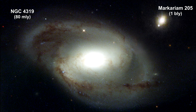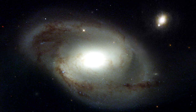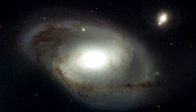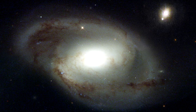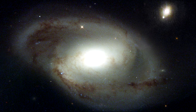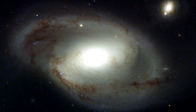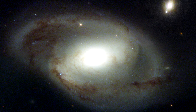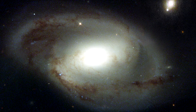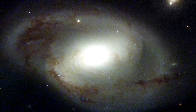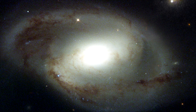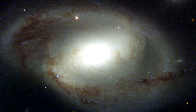This Hubble image shows the inner region of galaxy NGC 4319. The unusually dark, misshapen dust lanes in the galaxy's inner region are evidence of a disturbance, probably caused by an early interaction with another galaxy.